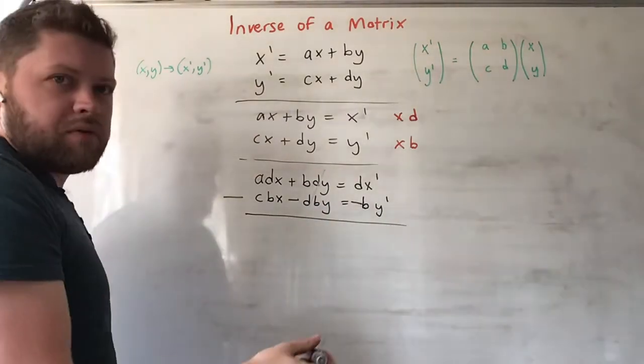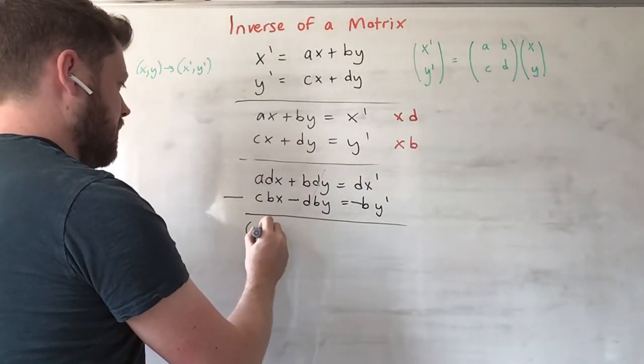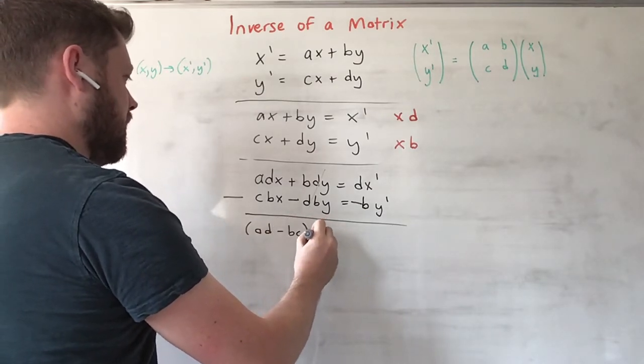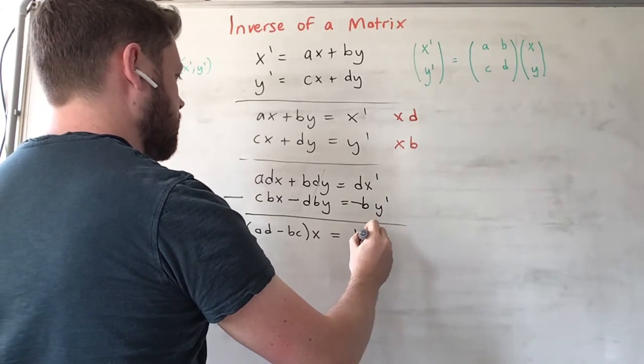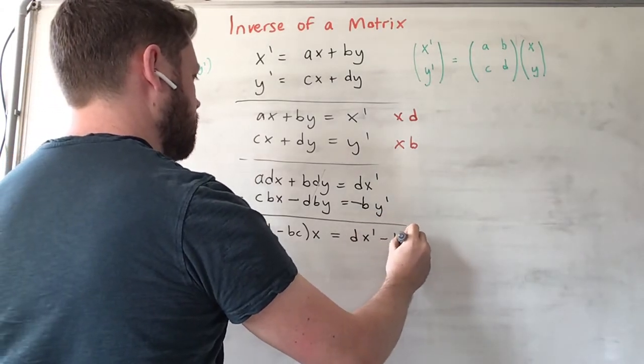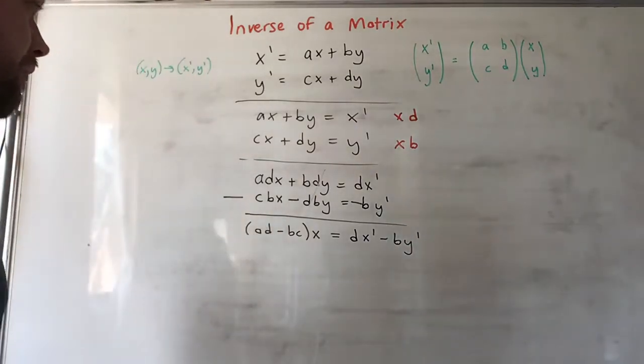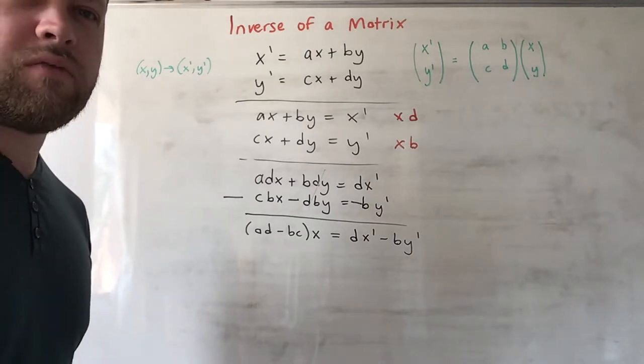That allows us to cancel these two. The whole purpose behind doing this process gives us (ad - bc) times x = dx' - by'.